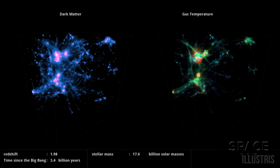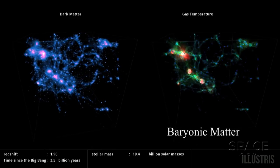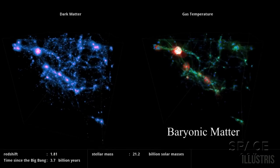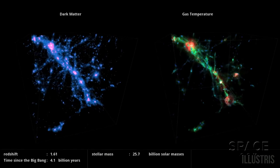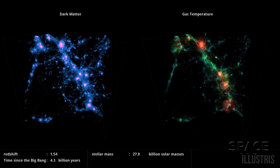On the right, we're watching the gas temperature of normal baryonic matter. And that flickering is the product of active galactic nuclei cycling through their quasar phases.